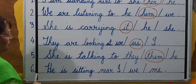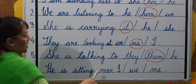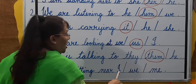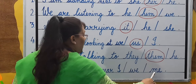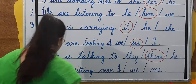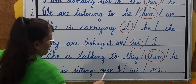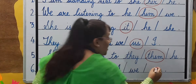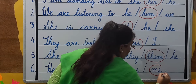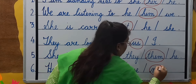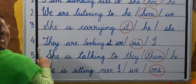Number six: He is sitting near — I, we, or me? The correct answer is me. Now let's read all these sentences again.